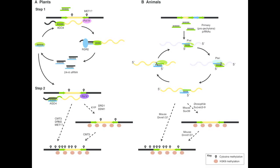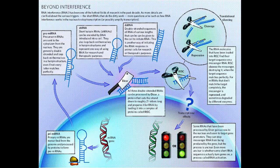Besides their role in gene silencing, the RNAi mechanism also facilitates protection against the accumulation of transposons and other repetitive DNA sequences, protecting against genomic instability. Because of the tremendous applications of RNAi in gene silencing and gene expression regulation, it is one of the most popular experimental molecular tools used in gene expression studies today, and was named the breakthrough of the year when its mechanism was discovered.